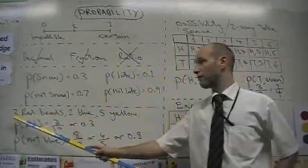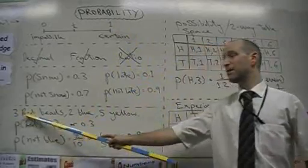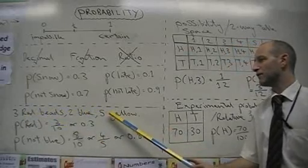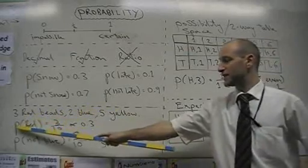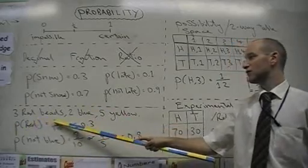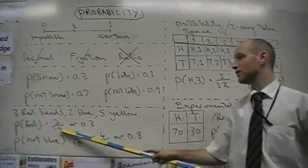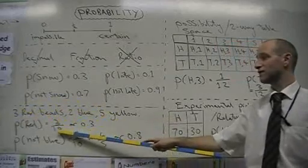Looking at another simple probability problem, we have beads in the bag. The examiners love to use these. 3 red beads, 2 blue, 5 yellow. So the probability of getting a red bead is 3 out of 10, because I have 3 red beads out of a total of 10 beads altogether.